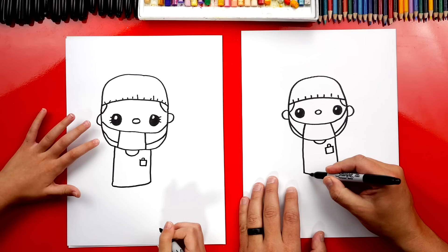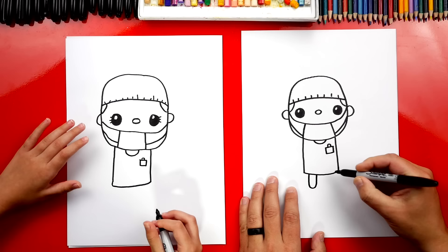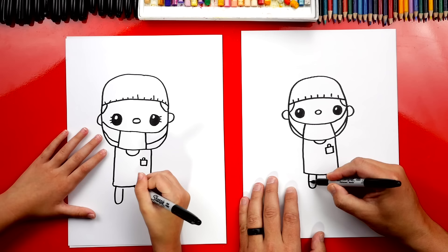Okay, now let's draw their legs. We're gonna draw a tall letter U for one leg and another one for the other leg. And then we could draw their doctor shoes. We'll draw a line across the bottom.